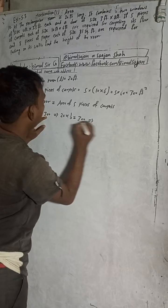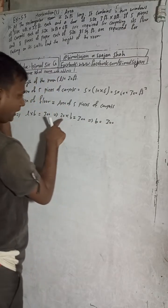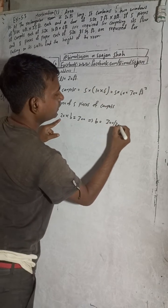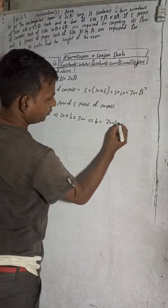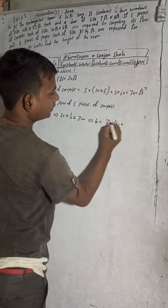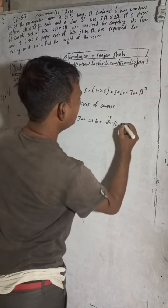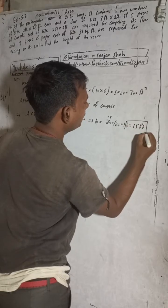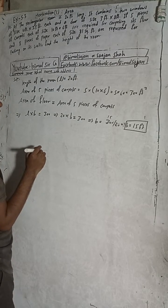We need to find the breadth B. So B equals 300 divided by 20. Three hundred divided by 20 gives us 15. Therefore B is equal to 15 feet. We have found the breadth of the room using the carpet information.